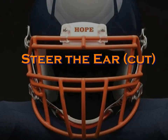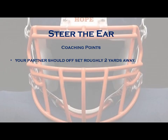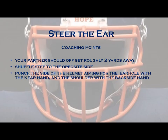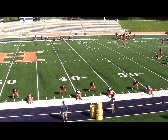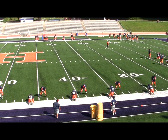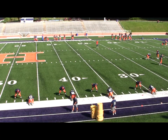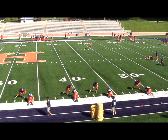One drill to incorporate in your block destruction is Steer the Ear, which works on defending against cut blocks. The drill begins with your partner offset roughly two yards away. We want to shuffle step to the opposite side, punch the side of the helmet aiming for the ear hole with the near hand, and the shoulder with your backside hand. We drop our near leg back to help protect our feet and then steer the ear down and away. We shuffle through and settle ready for contact. It's important your players strike down and away on this drill to keep their legs clean. For the cutter, he should leapfrog to about thigh height.